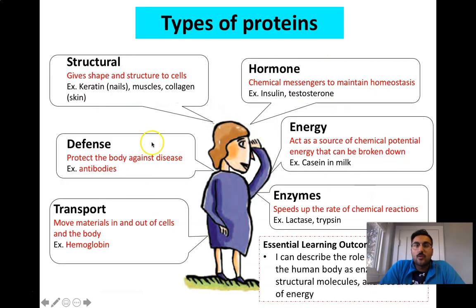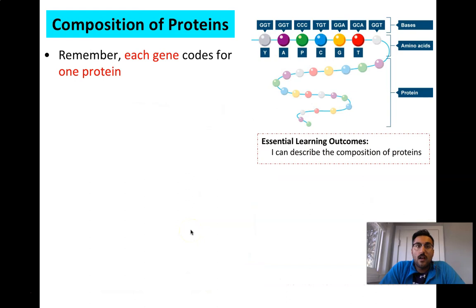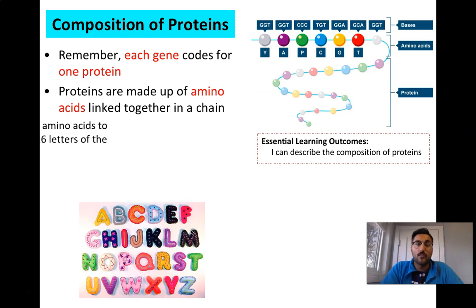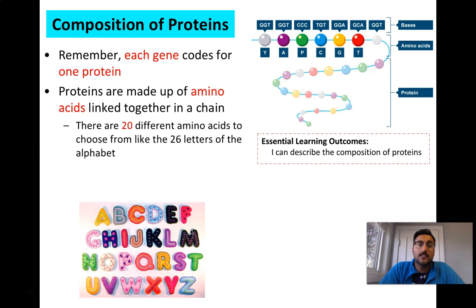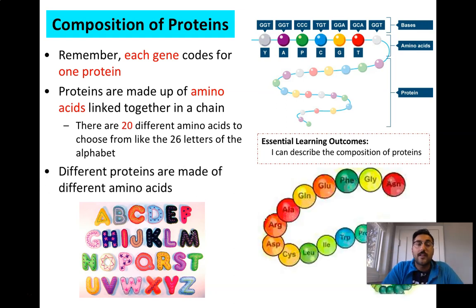Proteins do a lot in your body, and genes code for a specific set of any number of these. Each gene codes for one protein, and proteins are made up of amino acids. Amino acids link together in chains, and when that chain is complete, you have a protein. There are 20 different amino acids — like 26 letters in the alphabet — and from just those 20, you can make just about any protein in your body.